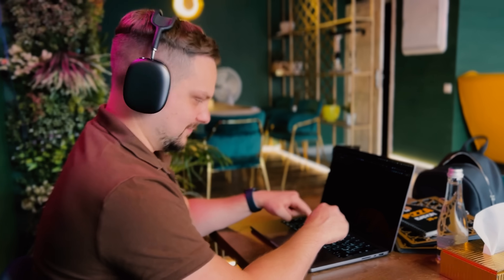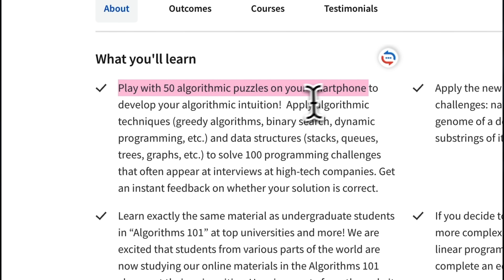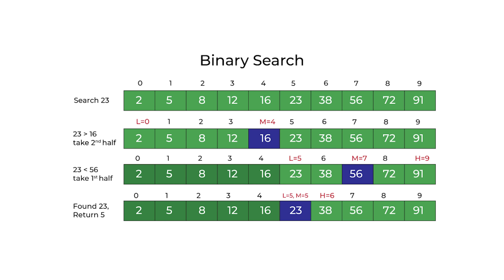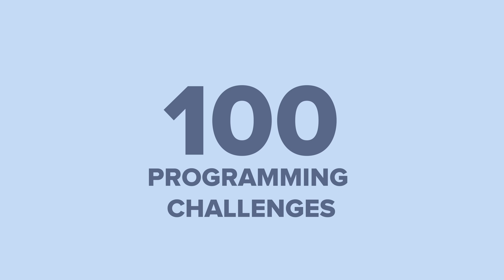Each course comes with quizzes and programming assignments, so you will have to test what you've learned at every step. You'll get to sharpen your algorithmic skills with 50 puzzles on your smartphone, practicing techniques like greedy algorithms, binary search, dynamic programming, and more. You will also work with data structures such as stacks, queues, trees, and graphs — all to solve 100 programming challenges commonly seen in high-tech company interviews. You'll also get instant feedback to know if your solution is correct, making this program very interactive.